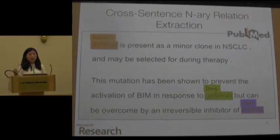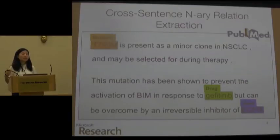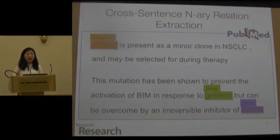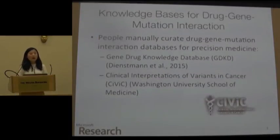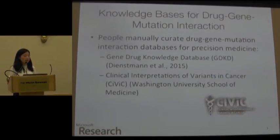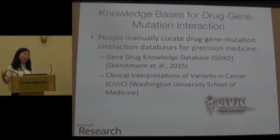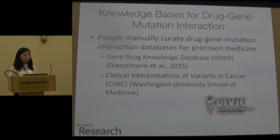If you consider several entities, it's less likely that all of them will appear in one sentence. This motivates our setting of cross-sentence n-ary relation extraction. People are manually creating these kinds of relations for precision medicine. For example, DGIdb and CIViC are two significant databases that people created, and it takes years of human effort and a lot of money to do so. We want to automate this process.